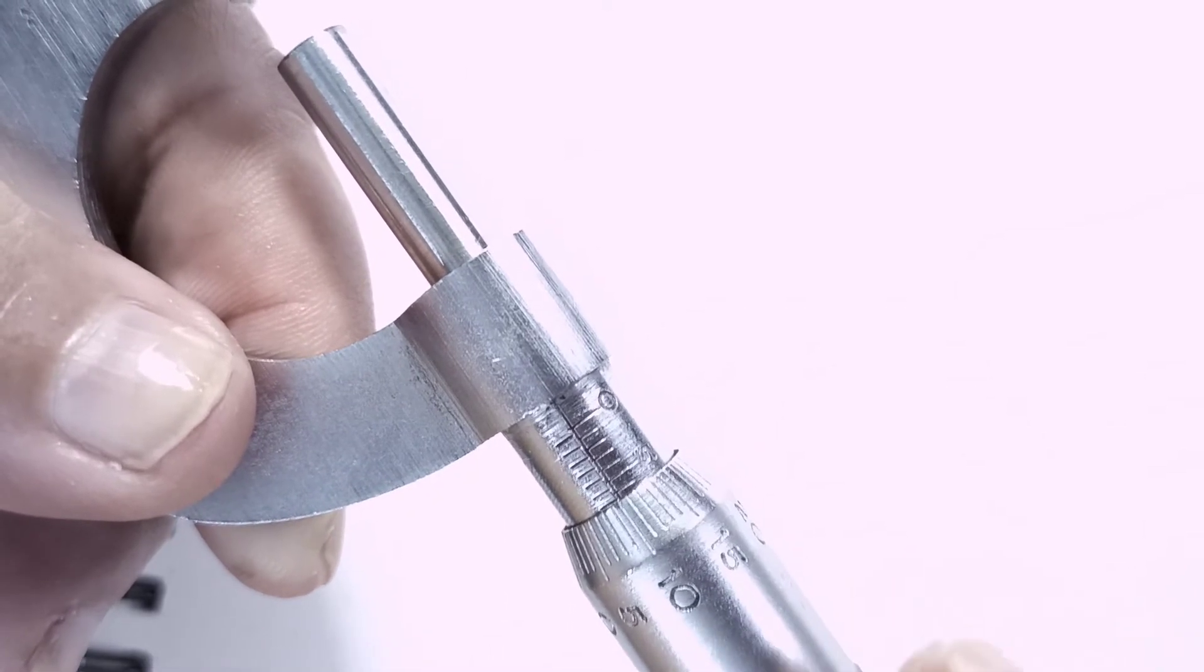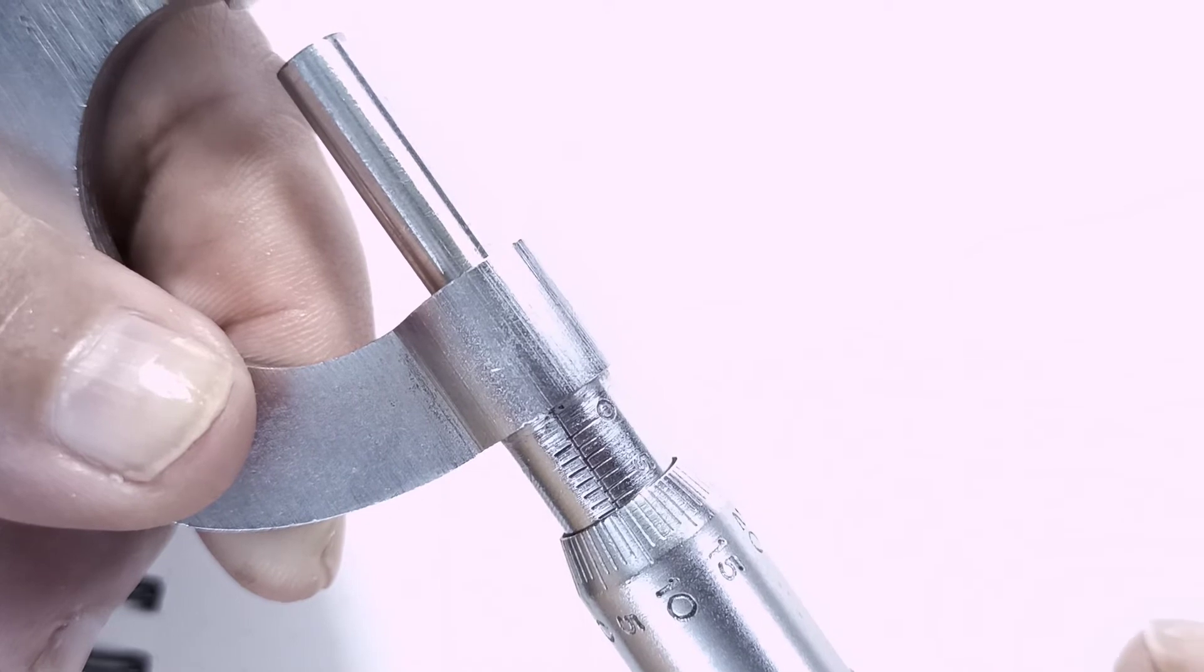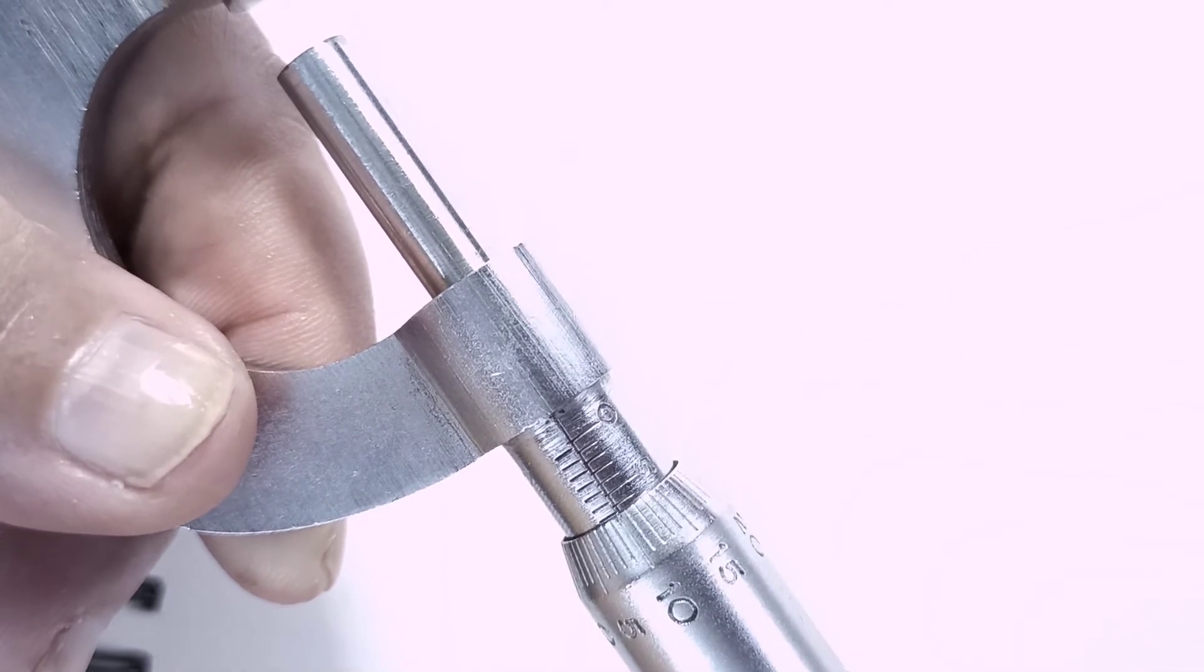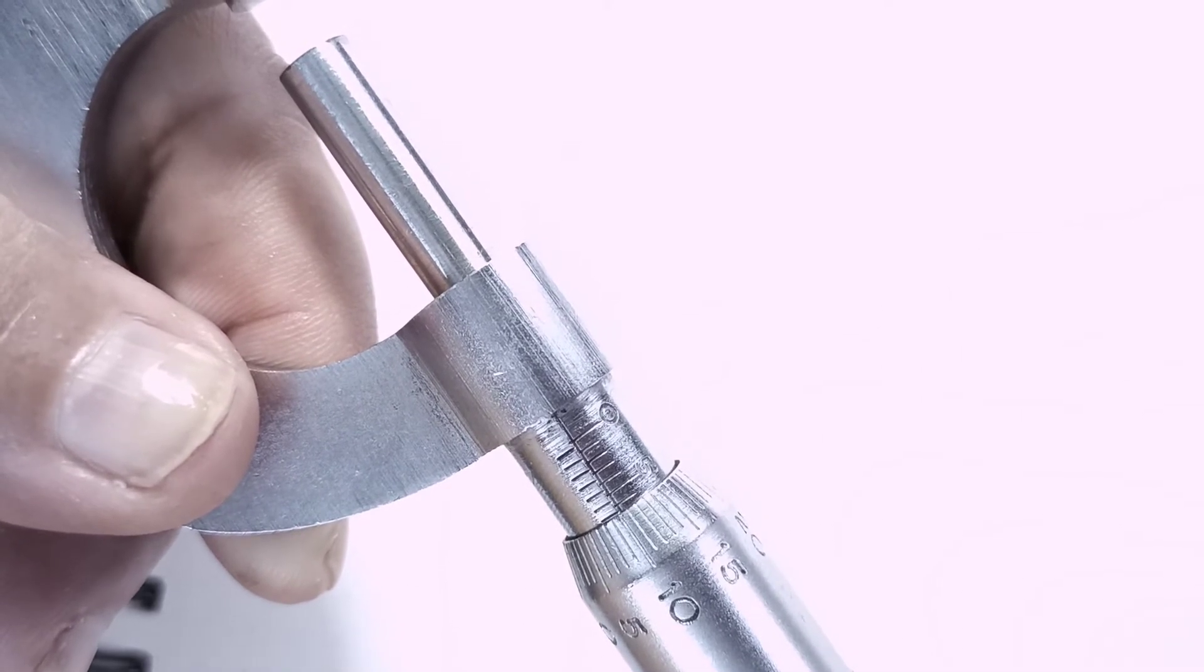So what is the backlash error and how to avoid it? This is a small important part of the screw gauge.